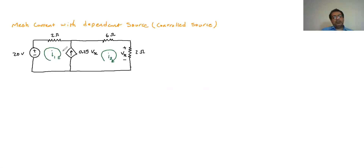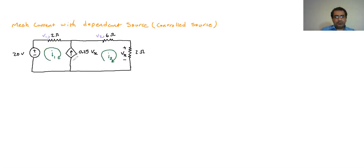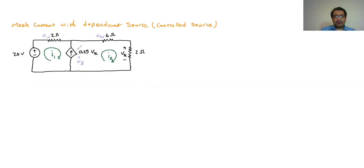Now I want to write the equations. The problem with the first mesh is that there is a current source in it, and there is no way I know the voltage of that current source. The value 0.25 Vx is the current magnitude, not the voltage. Whatever voltage that current source has, I don't know. So I cannot write Kirchhoff's voltage law in this loop, or in the right loop either, since it still involves the voltage of that current source.